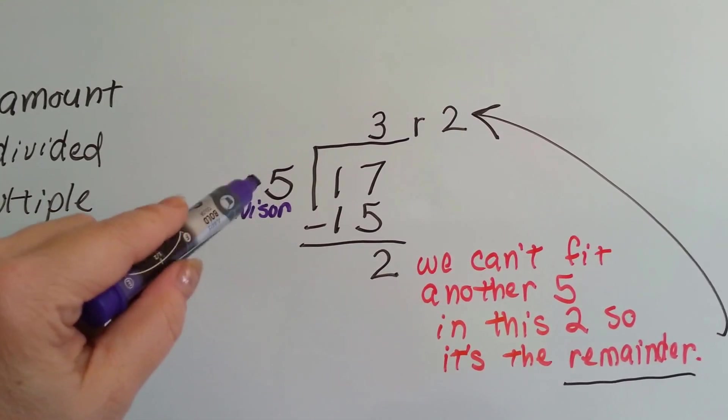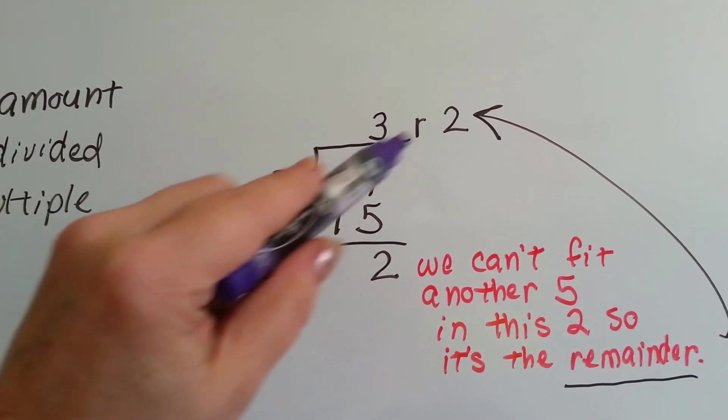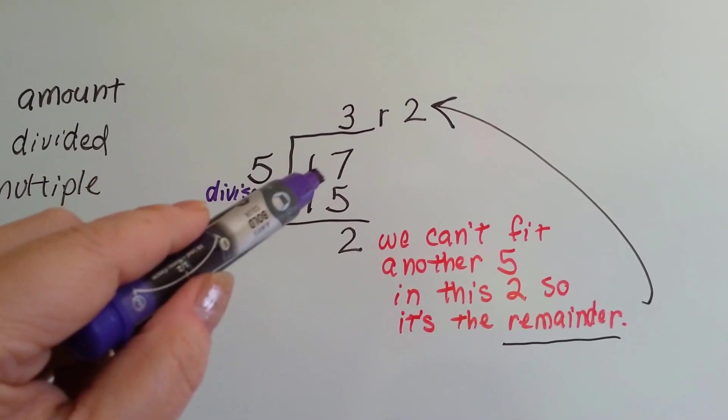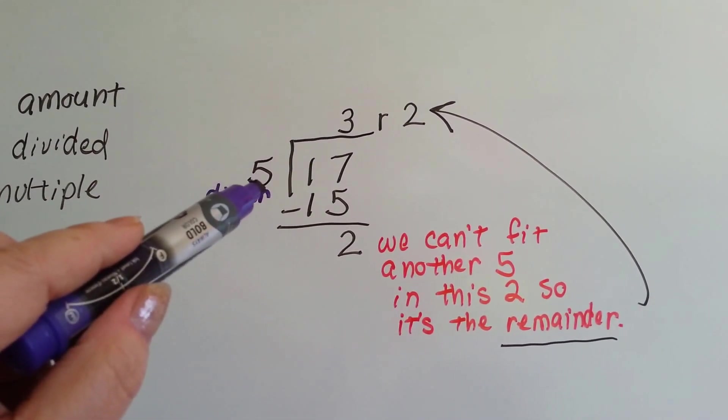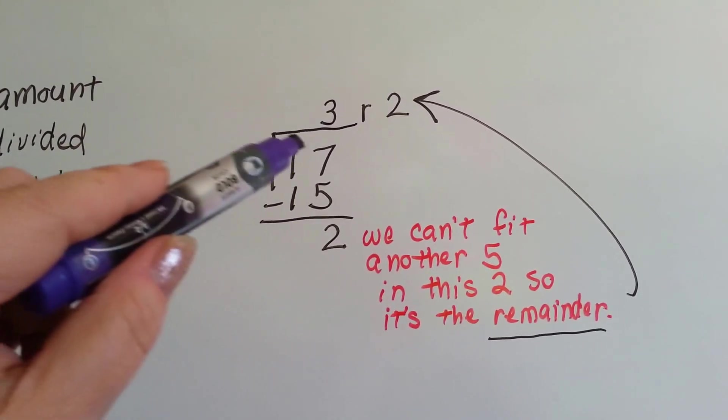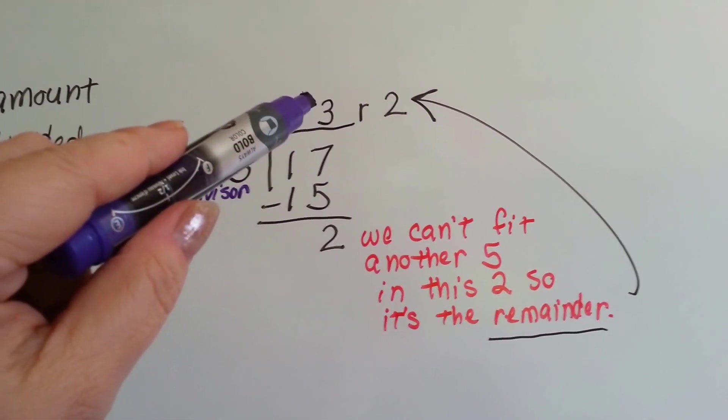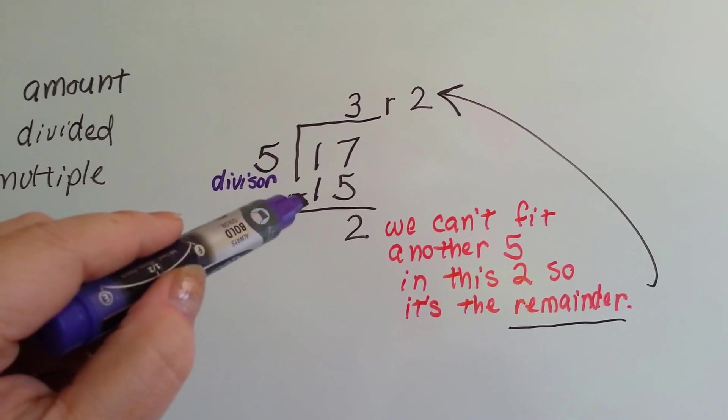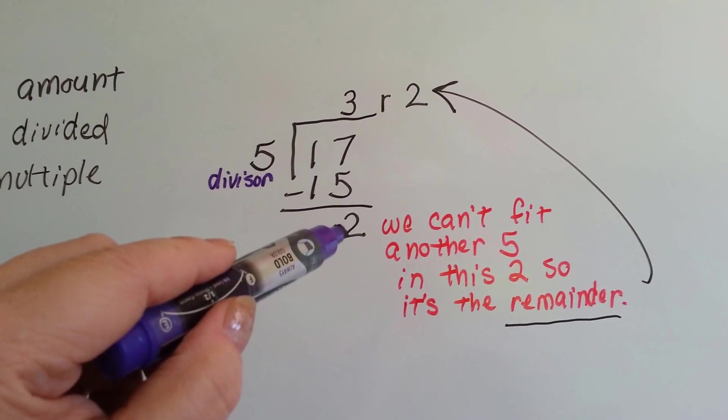If it's not a multiple of the divisor, then it's going to have a remainder. 17 divided by 5 is 3 remainder 2, and this is why. 5 goes into the 17 three times because 5 times 3 is 15. We do our subtraction and there's a 2 left over.